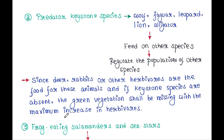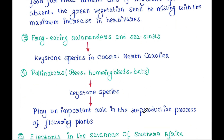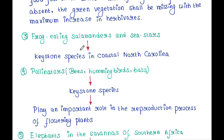Frog-eating salamanders and sea stars are keystone species in coastal North Carolina. Next, pollinators like bees, hummingbirds, and bats are also keystone species. They play an important role in the reproduction process of flowering plants.